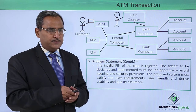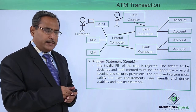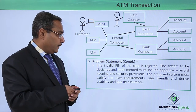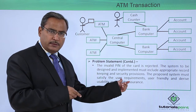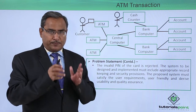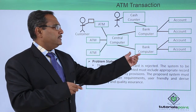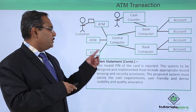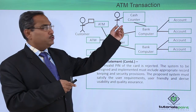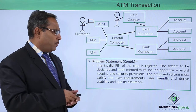The invalid PIN of the card is rejected. The system to be designed and implemented must include appropriate record keeping and security provisions. The proposed system must satisfy the user requirements. The system should be user-friendly, derive usability, and also give quality assurance. Here is one diagram showing the central computer connected with bank computers via a computer communication network, with ATMs connected to the bank computers where different accounts are maintained. There is a cash counter and different customers who will be using the system.